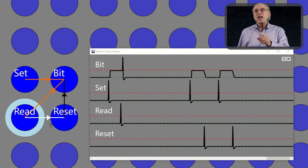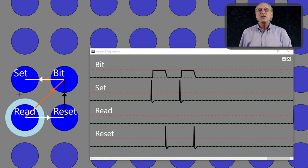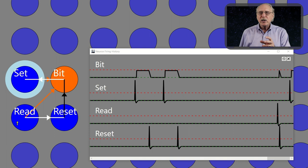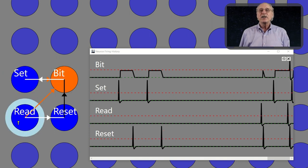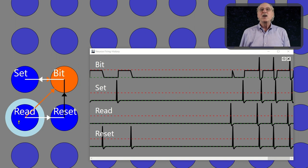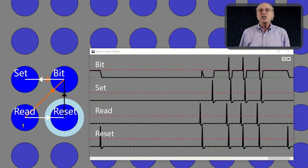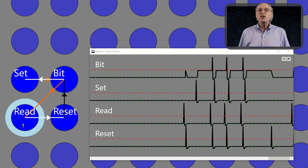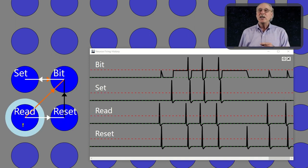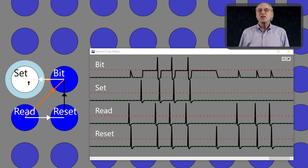By connecting a set neuron with a synapse weight of 0.9, the internal charge of the bit neuron will be increased, but not enough for the neuron to fire. Now a second input from a read neuron will cause the memory bit to fire, but only if it has been set. To round out the picture, a reset neuron connected with a weight of minus 1 will clear the memory bit, regardless of the state.